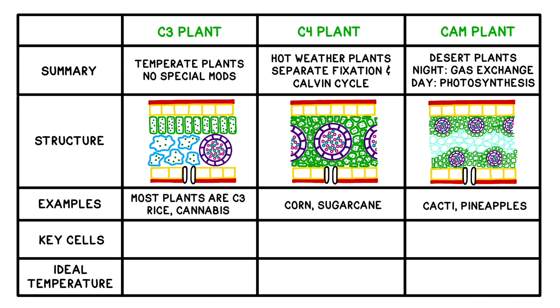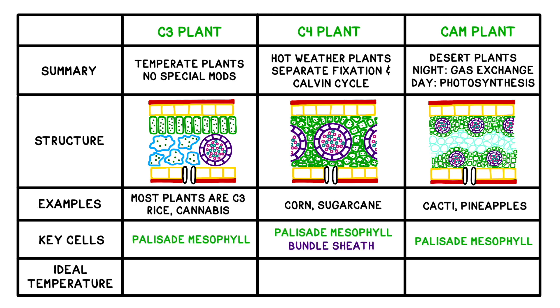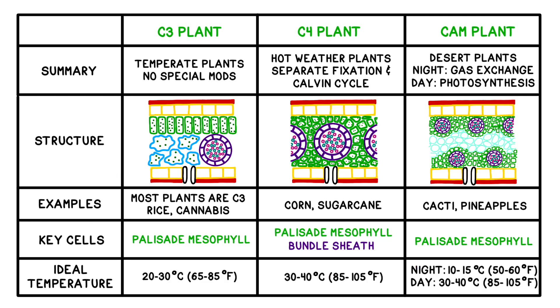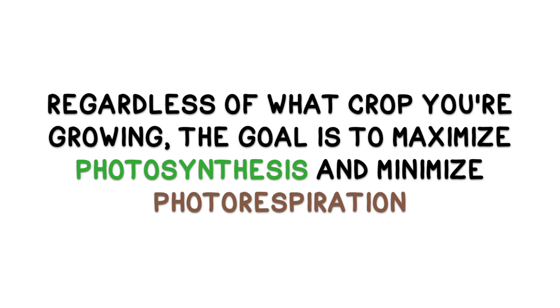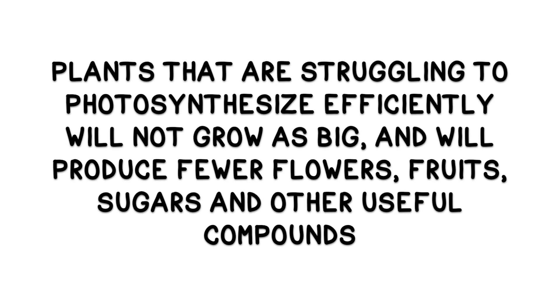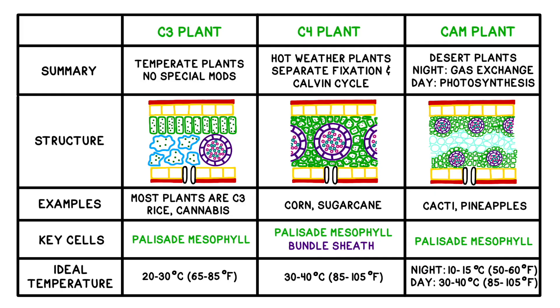Hopefully now you can fill in the rest of the summary table—we've covered the processes, the leaf structure, example plants, key cells, and the ideal climate for each type of plant. So what does this mean for people trying to grow crops? The goal is to maximize the rate of photosynthesis and minimize photorespiration by optimizing the conditions. Plants that are struggling to photosynthesize efficiently won't grow as big, will have fewer flowers, and yield less fruit, fewer seeds, and fewer sugars and other useful compounds. Optimizing conditions will look different depending on whether you're growing C3, C4, or CAM plants—these plants have different ideal conditions, so it's very hard to grow them all in the same place and still get maximum yield.